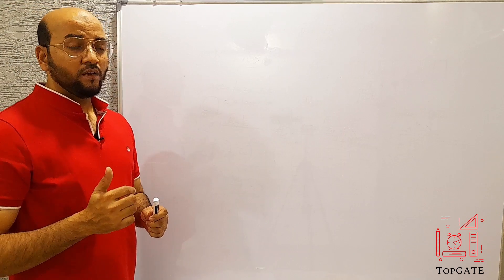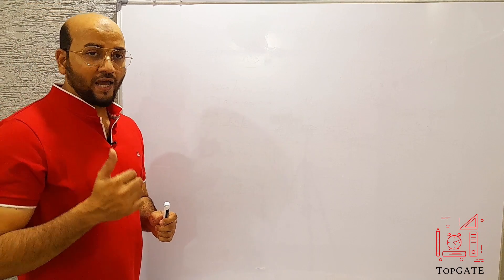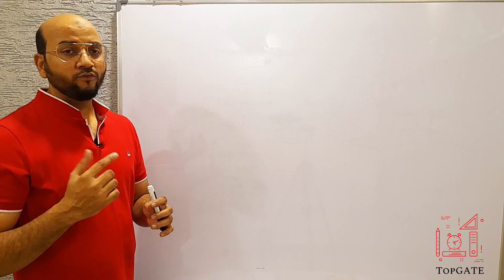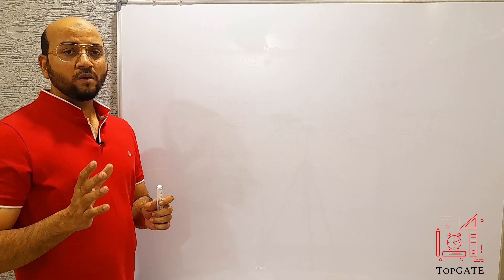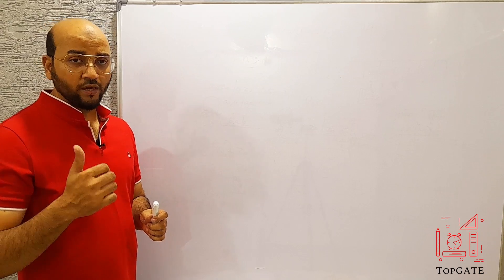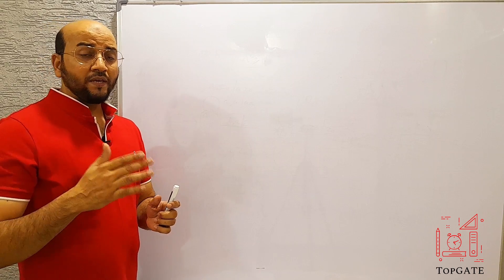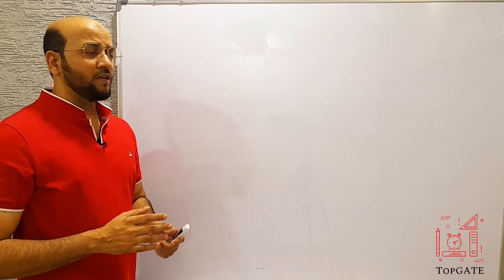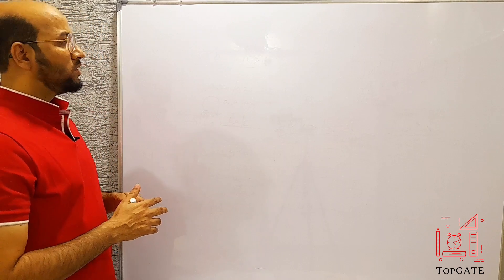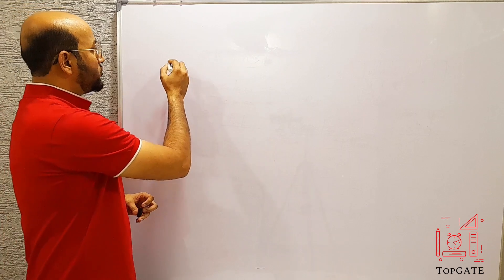In this problem, we need to design a PDA for a language which has equal number of A's and equal number of B's. Equal number of A's and B's means the string can start with A or with B, there can be an A after B, and there can be a B after A — no restriction is there.